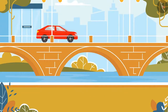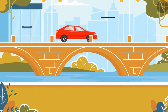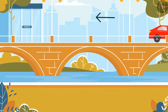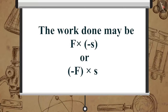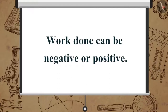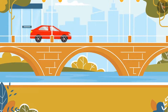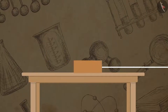Suppose a car is moving from left to right with a uniform velocity. Now we apply a retarding force in the opposite direction, that is from right to left. There is a 180-degree angle between the direction of motion and the direction of force. In this situation the work done is considered as negative. The work done may be F multiplied by minus s, or minus F multiplied by s. Therefore work done can be negative when the force acts opposite to the direction of displacement, and positive when the force acts along the direction of displacement.